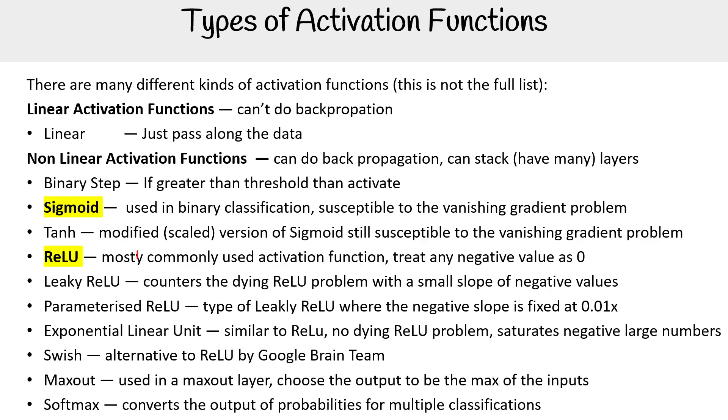Softmax—this is something you'll see a lot if you're looking at architectural diagrams. If you look at the transformer architecture, look for the word softmax. You'll always see these near the outputs. Converts the outputs of probabilities for the multiple classifications.